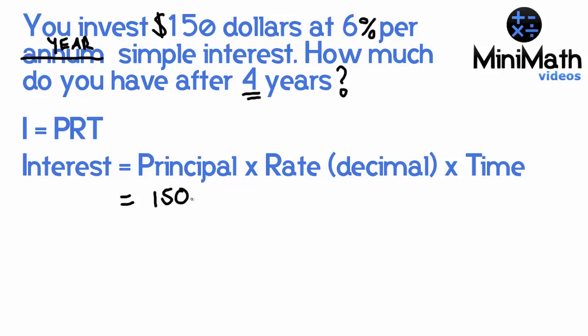What's the principle? $150. What's the rate? It's 6% divided by 100 to convert it to a decimal. The time is four years.